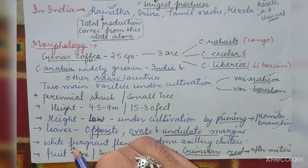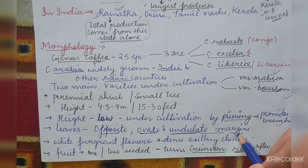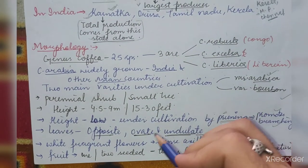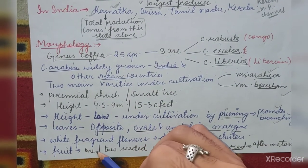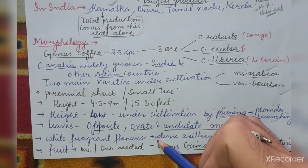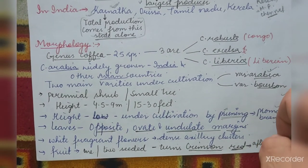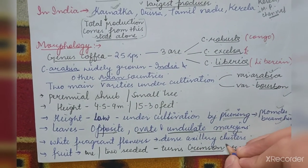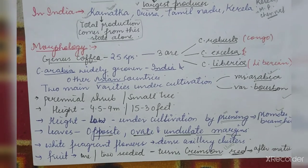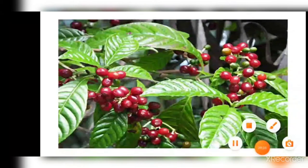The leaves are opposite in arrangement, showing opposite phyllotaxy. They are ovate in shape with undulate margins. White, fragrant flowers are borne in dense axillary clusters. The fruit is one- or two-seeded. After maturity, the fruit turns crimson red.